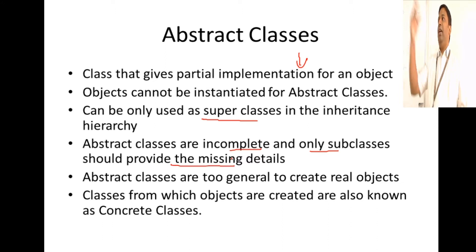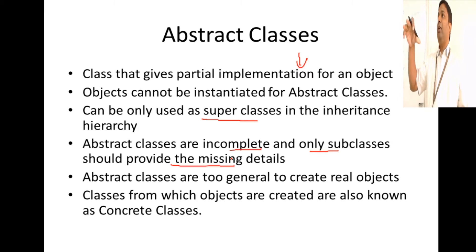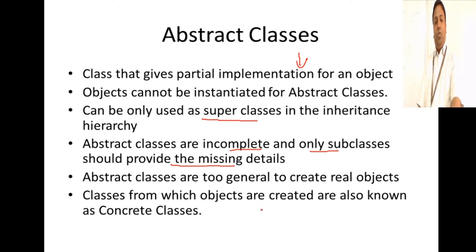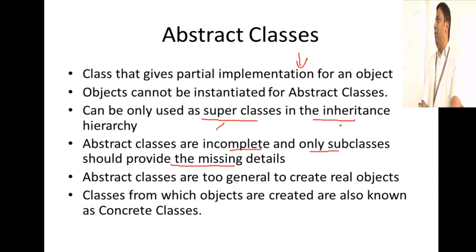When you extend an abstract class, it is mandatory for you to provide the definition for the methods that are abstract in your superclass. You cannot instantiate abstract classes, and when you extend or inherit an abstract class, you have to provide the definitions for all those methods that are abstract.